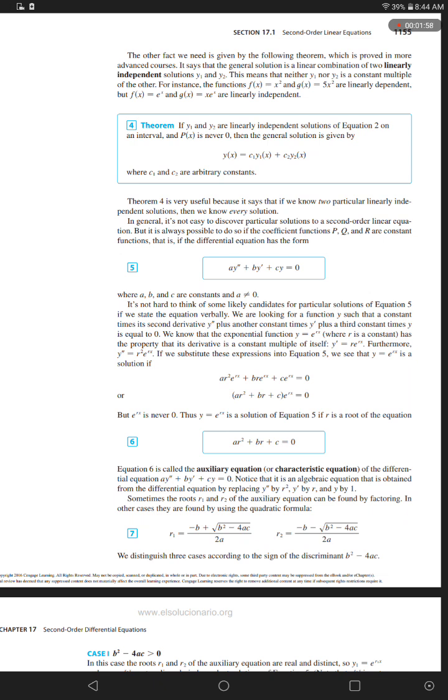A times the second derivative of y plus B times the first derivative of y plus C times y equals 0, where A, B, and C are constants and A does not equal 0.